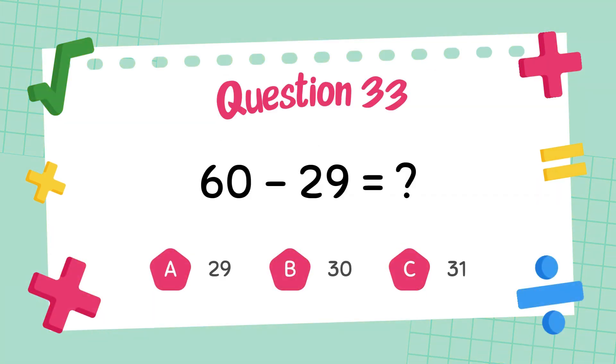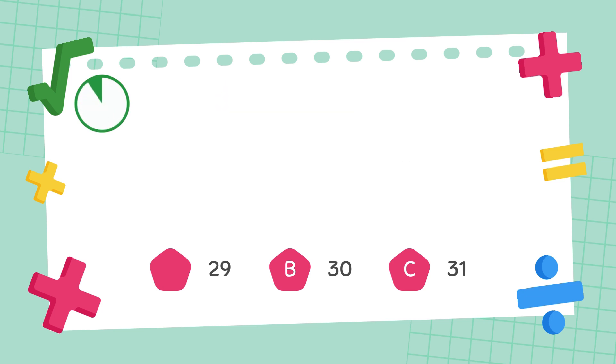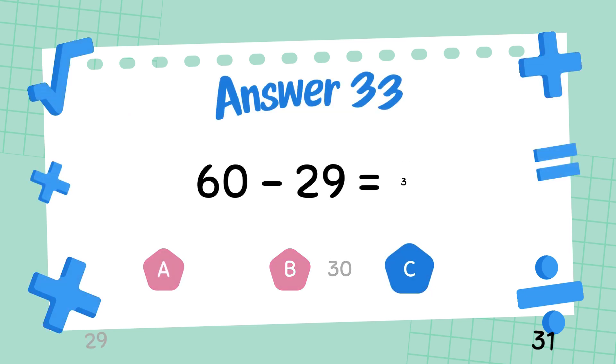What is sixty-nine minus twenty-nine? The answer is thirty-one.